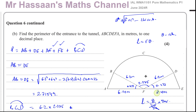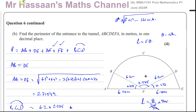That completes question six from this paper, June 2024, Pure Mathematics P1. Other questions from this paper can be found in the playlist on the top right, and questions on radian measure and trigonometry are in their respective playlists. You can subscribe by clicking the link — thank you for watching and see you soon.